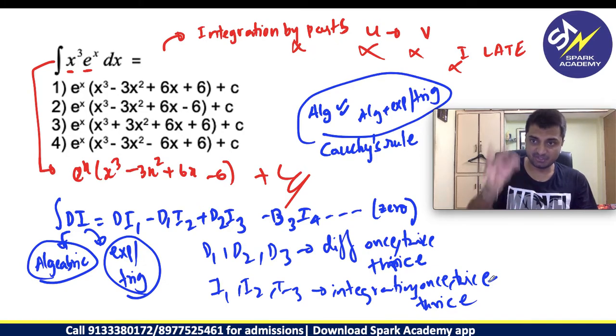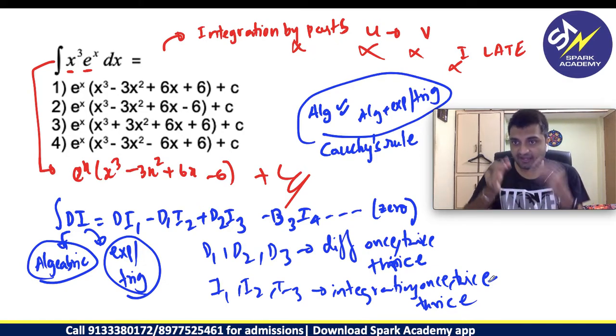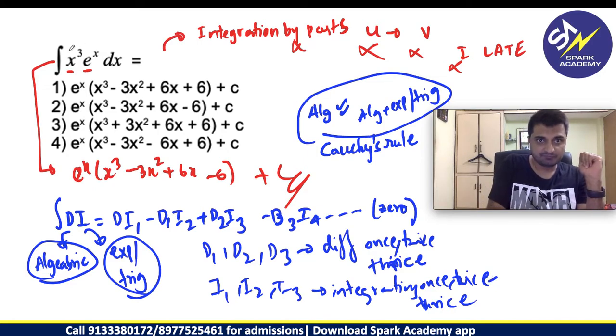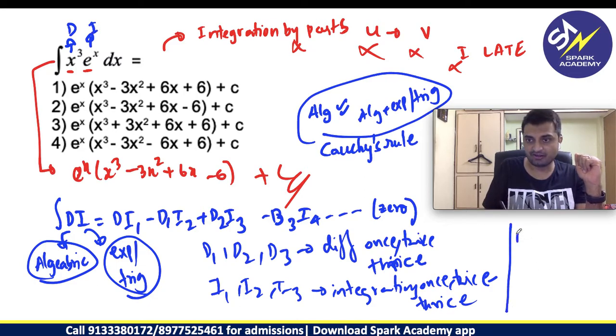This is your Cauchy's rule and now simply putting that rule, this is an algebraic so this will be D, this will be I. In your rough you can say D is x³, I is eˣ.